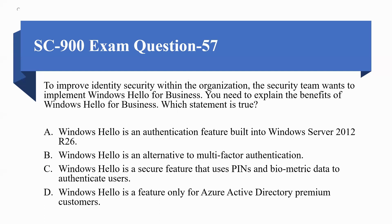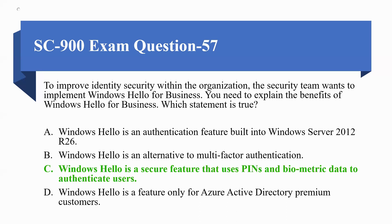Next question: to improve identity security, the security team wants to implement Windows Hello for Business. Which statement is true? Option A) Windows Hello is an authentication feature built into Windows Server 2012 R2. Option B) Windows Hello is an alternative to MFA. Option C) Windows Hello is a secure feature that uses PINs and biometric data to authenticate users. Option D) Windows Hello is a feature only for Azure Active Directory Premium customers. The correct option is C: Windows Hello is a secure feature that uses PINs and biometric data to authenticate users.